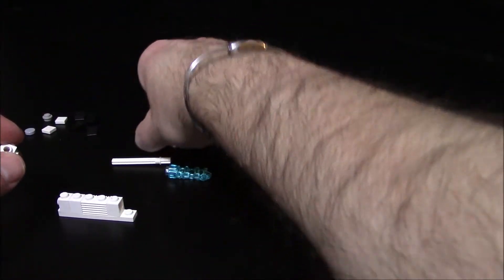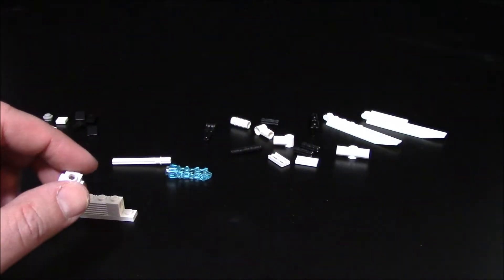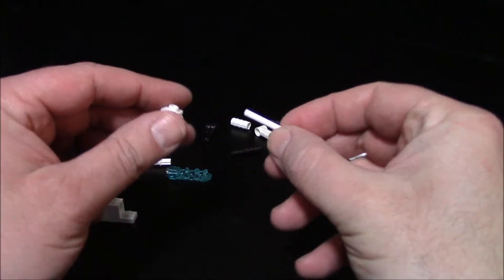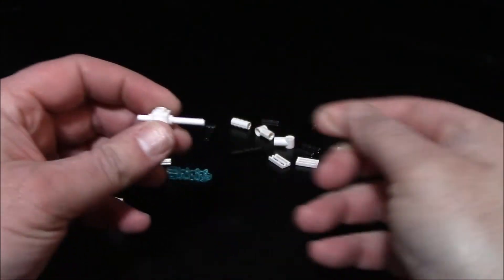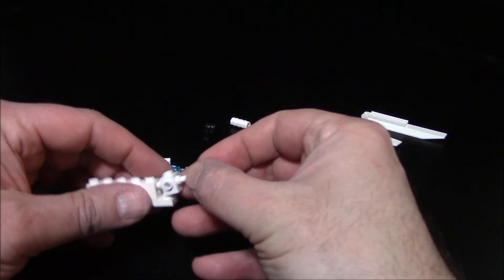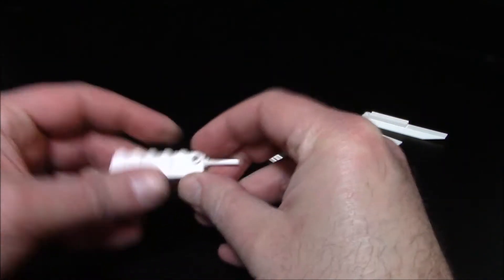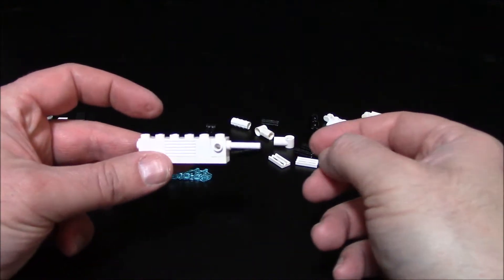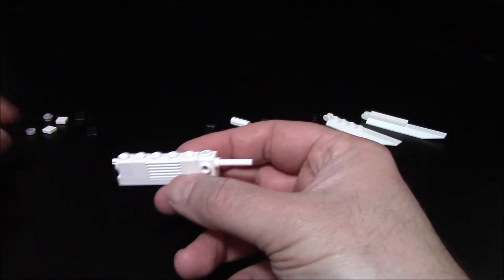Then we're going to get our white travis brick and the 1x4 white lightsaber blade, push things to about there, and feed this in like this. That's the back end here.